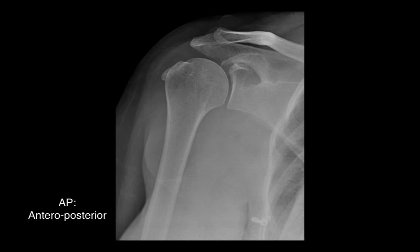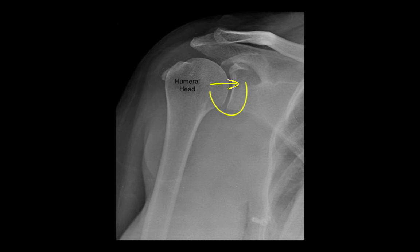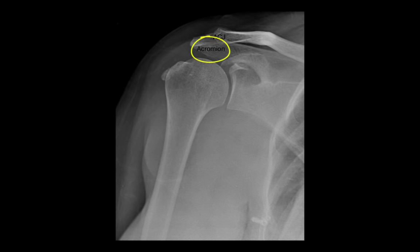This is an AP view of a shoulder, and we can see here the humeral head articulating with the glenoid fossa of the scapula. The glenohumeral joint isn't the only joint of the shoulder, and it's important to specify that you're not talking about the acromioclavicular joint, which is formed by the acromion process articulating with the distal clavicle.